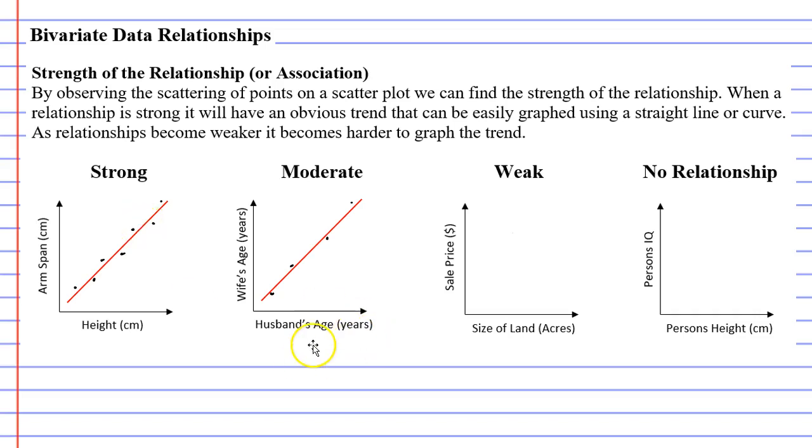And this is because there's not a big age difference between the husband and wife. But we know that there's always relationships where the wife is quite a bit older than the husband, or maybe the husband's quite a bit older than the wife. And so we start getting points that veer off a bit more from the trend. We say that this has a moderate relationship or a moderate association.